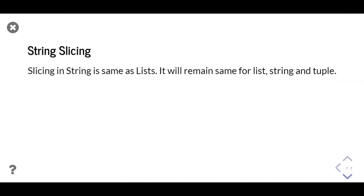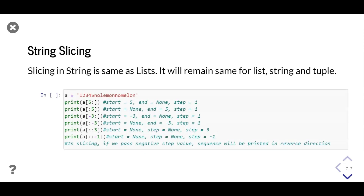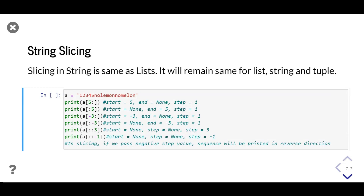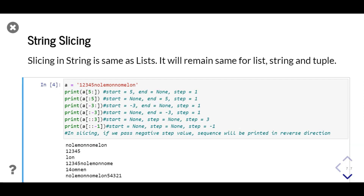String slicing also works in the same manner as it does for a list. We can pass three parameters — start, end, and step value — inside square brackets. The code contains different ways a string can be sliced; you can see the values start, end, and step in the comments. Notice the last print statement: we passed negative one as the step parameter, which causes our string to reverse. All sliced strings are printed, and the last one is in reverse order.